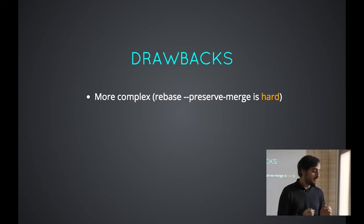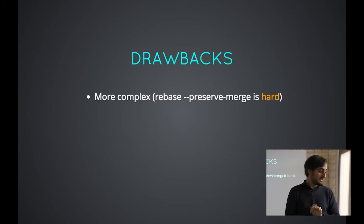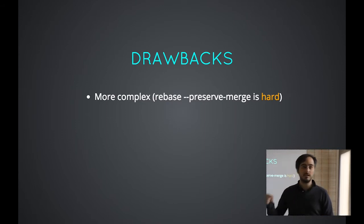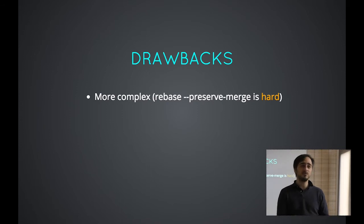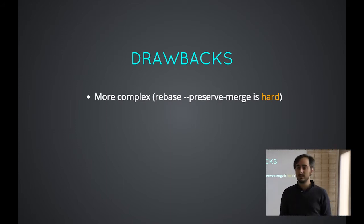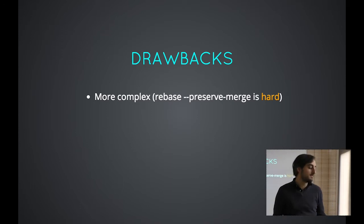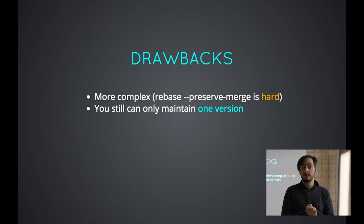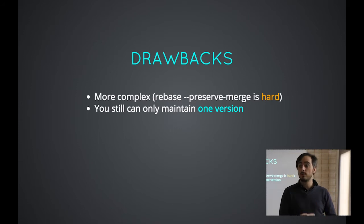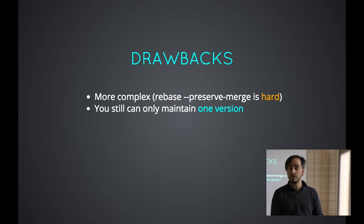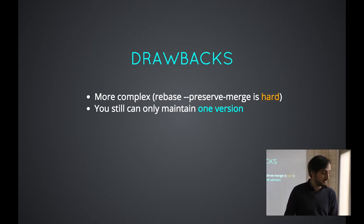Feature branches are more complex than no-workflow. An example of what is very complex to do with feature branches is rebase preserve merge. Let's say you have a history with a lot of branching and merging, very complex, and there is one commit you need to get rid of but you want to keep the whole schema — all the merges and branching. You have to do rebase preserve merge to do that, and it's very, very difficult. You also still can only maintain one version. Even if you have feature branches, once you've merged them into your develop or master branch, they're merged, so you can't make a release that excludes them.